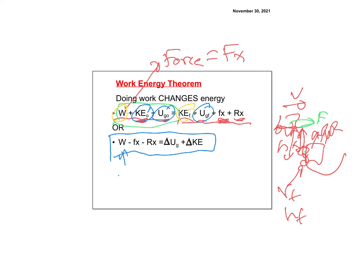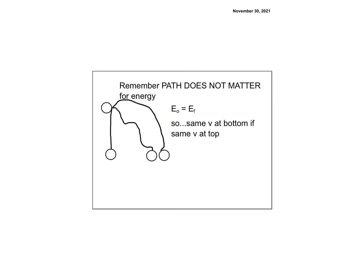Another way to look at it: work in minus work lost equals the change in total mechanical energy. Work lost to friction or air resistance can't be recovered — notice you need F·x, not just F, since work is in joules not newtons. This can change the total mechanical energy. If there's no non-conservative work, the total mechanical energy stays constant — the change in potential energy equals the negative change in kinetic energy.